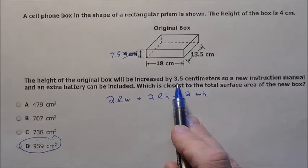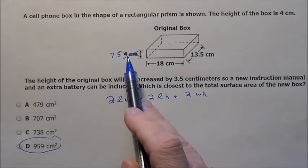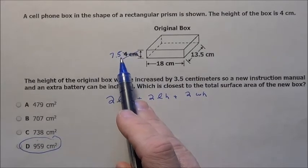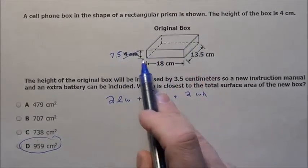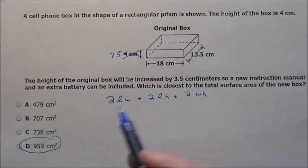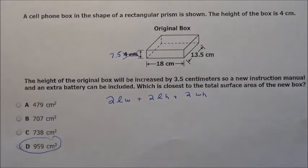So 3.5 plus the 4 means the height is now 7.5 so just imagine the box with those measurements plug in your numbers and out will come option D for problem number 38.